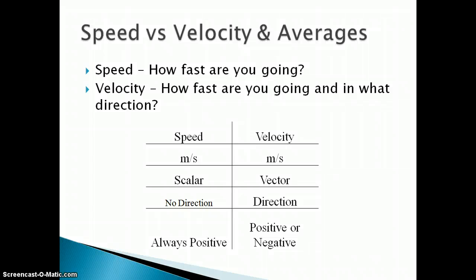Both of them are measured in meters per second. Speed is a scalar, which means it's just a number. It has no direction associated with it. Velocity is a vector, so it has the number and the direction. Speed is always positive. Velocity can be positive or negative.